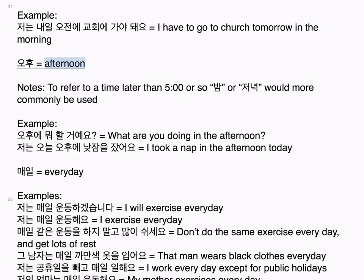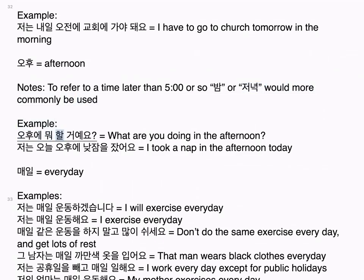오후 means afternoon. Notes: To refer to a time later than around five o'clock, 밤 or 저녁 would more commonly be used. Examples: 오후에 뭐 할 거예요? What are you doing in the afternoon? 저는 오늘 오후에 낮잠을 잤어요. I took a nap in the afternoon today.